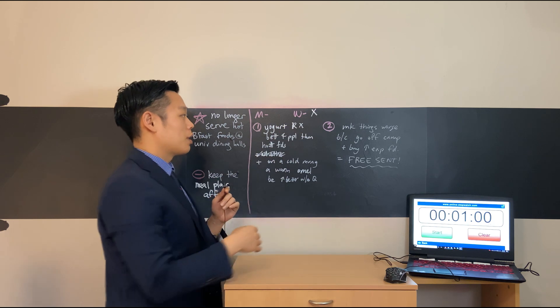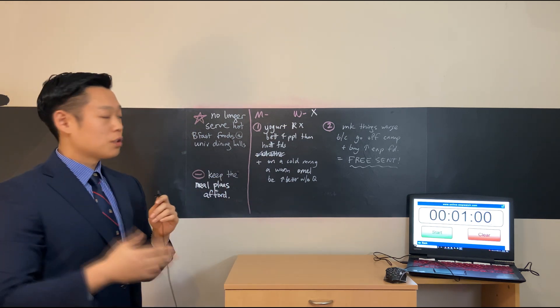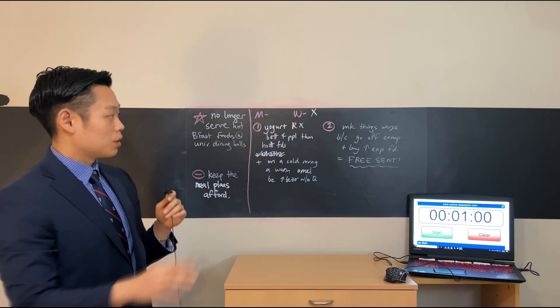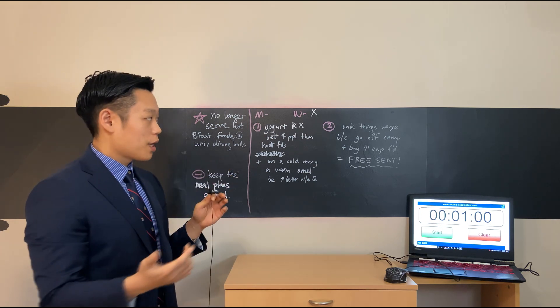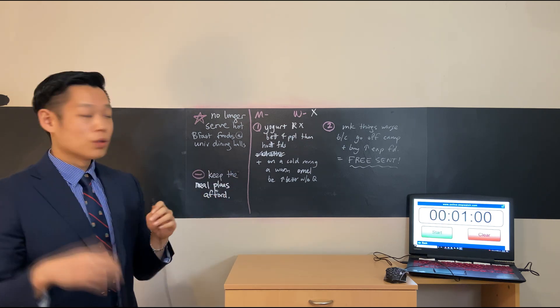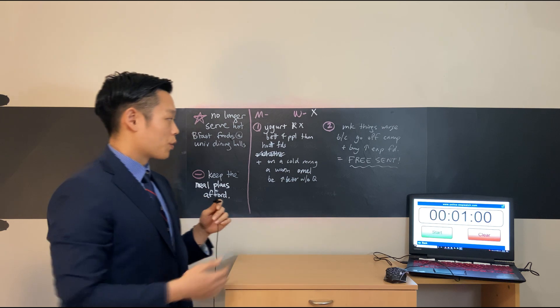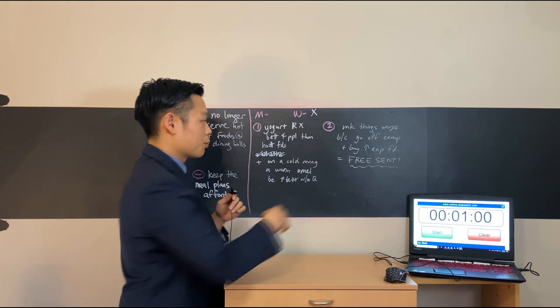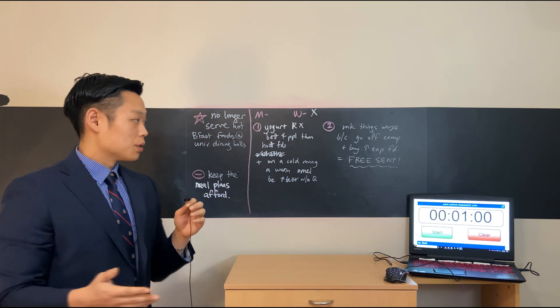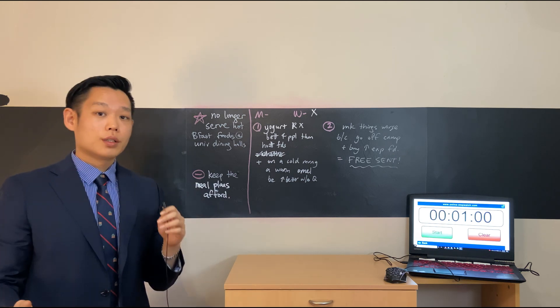Now the second reason: the woman said that the university is actually making things worse for students, because if students can't get what they want on campus, they will go off campus and end up buying more expensive food. The free sentence is going to be: as a result, the woman thinks that this new policy is not a good idea.